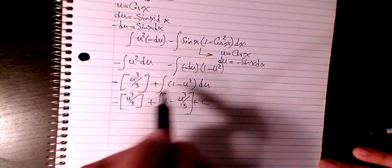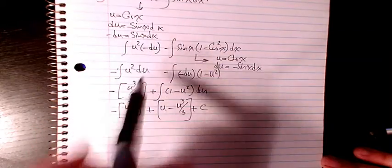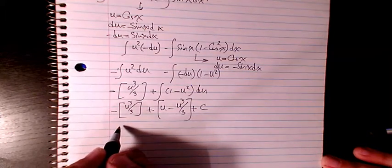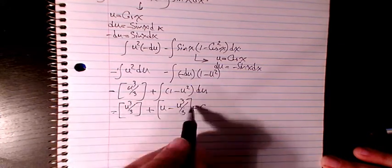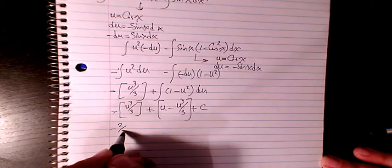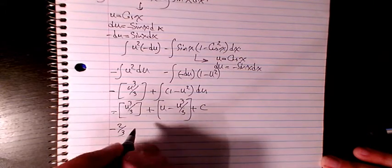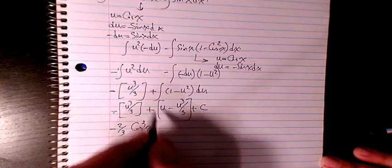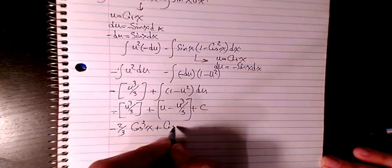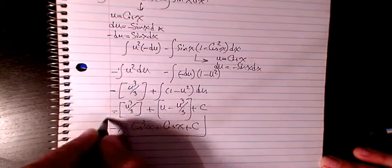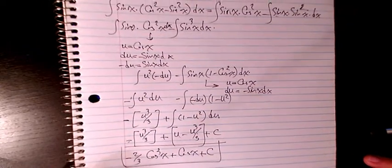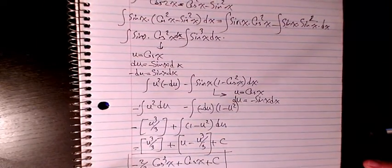So we know u is cosine. These two terms are the same, so it's going to be negative two over three, and u cubed is cosine cubed x plus u which is cosine x plus c. So that's the final answer to this question.